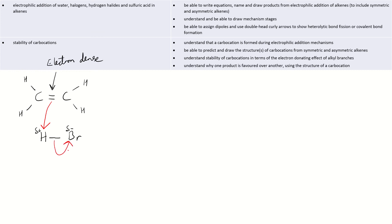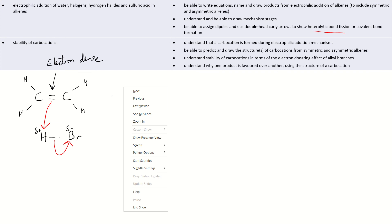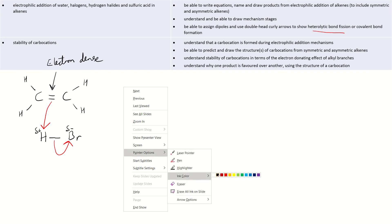The bromine takes both electrons. This is what's known as heterolytic bond fission — both electrons go one way. 'Hetero' means different, so the electrons split unequally. That's our initial stage where the reactants come together, and we'll now look at the intermediate stage.